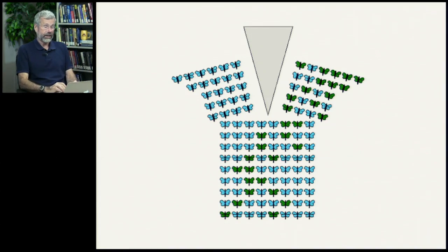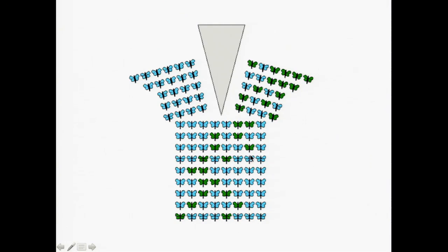Here's a cartoon version of this, going one generation to the next. We start with two different forms — blue butterflies and green — both persisting in a relatively large population. At one generation, a barrier separates half the population from the other half. Those on the left didn't contain the green form, so generation after generation they're just blue — the founder effect. On the other side, again a founder effect, and they may become more green just by chance.